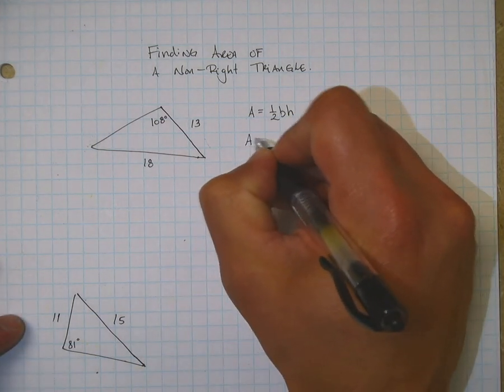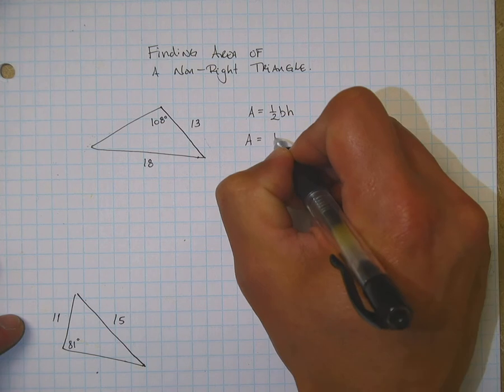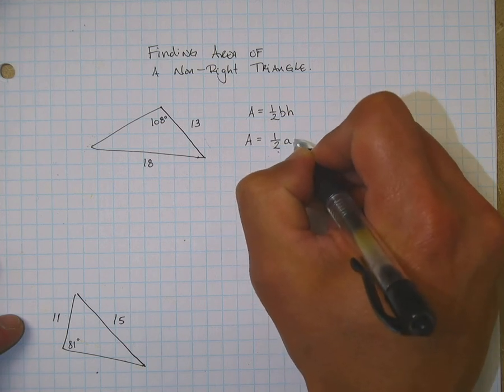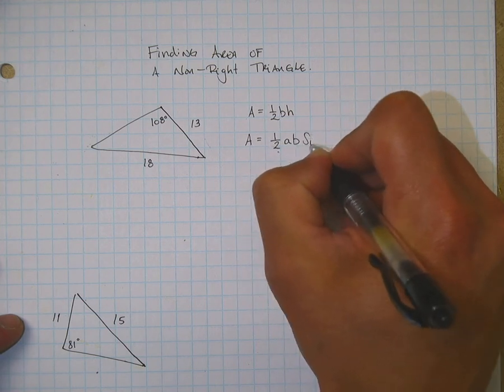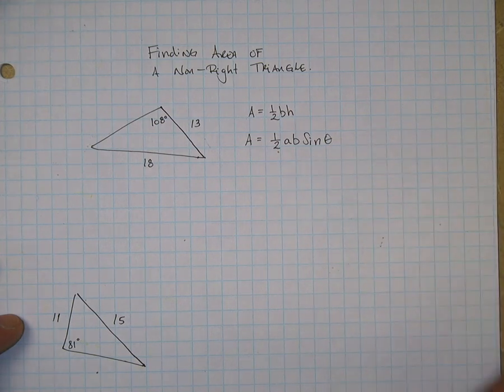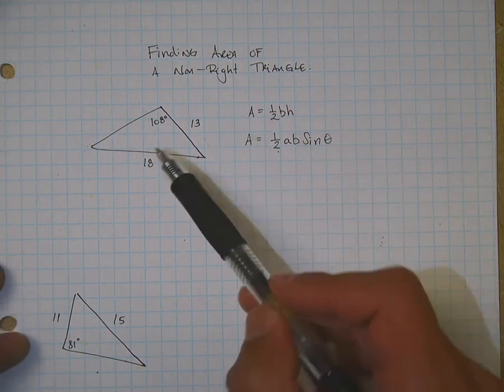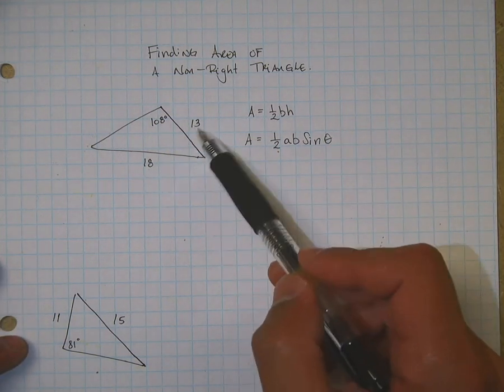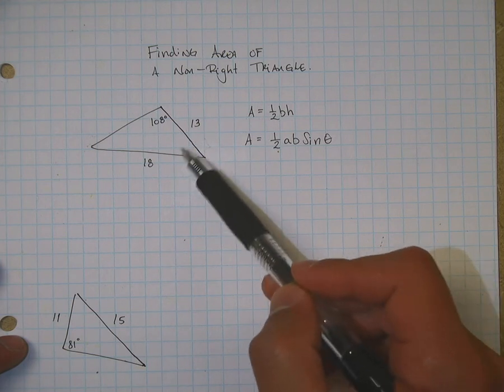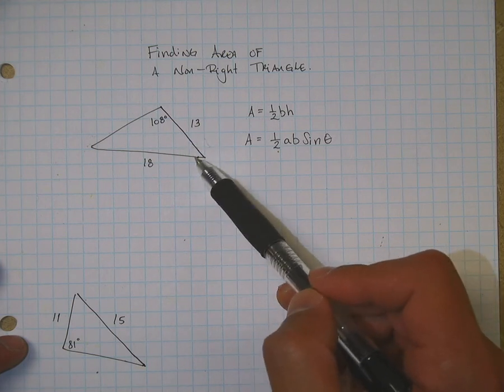So, the way we do that, we have to use the sine. The formula is one-half AB times sine of theta, the angle theta. What you want to do is pick two sides, and you're going to use the sine of the angle that's between.